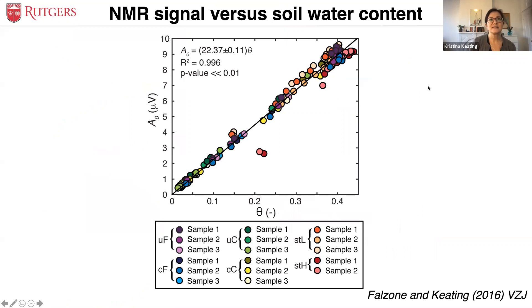Here's an example of how that works — I'm using A0 to characterize the NMR signal, the same as M0 from the previous slide. These samples are all fully to partially saturated, and you can see there's a really great alignment between the water content and the initial signal amplitude. A couple of samples don't perfectly align, and those are affected by iron within the sample itself — I'll talk about that later.